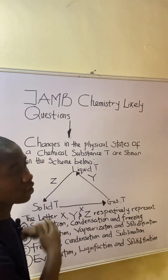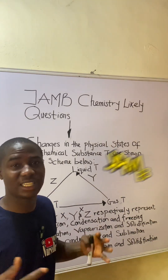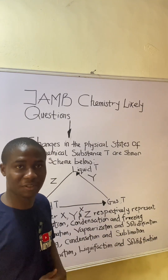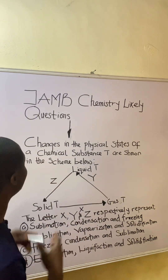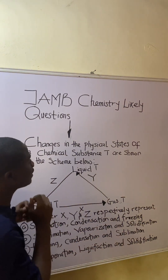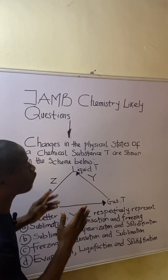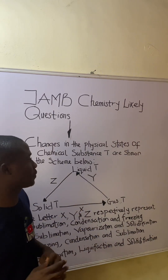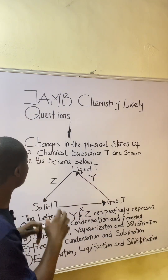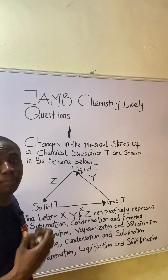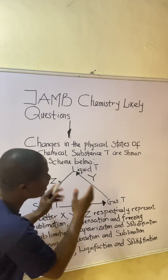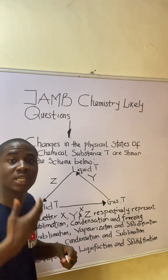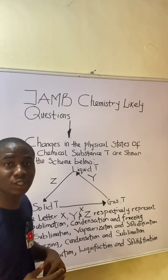Let's say you came across this question in the JAM exam — how will you solve it? It is very easy. The question says changes in the physical state of a chemical substance T are shown in the scheme below. This scheme is specifically called the phase transfer triangle.